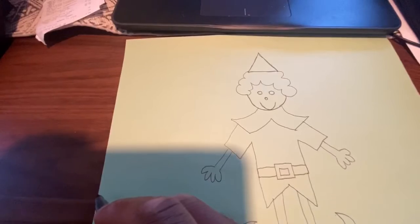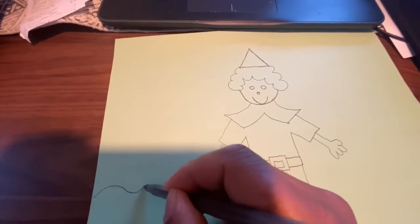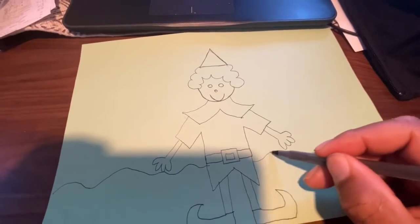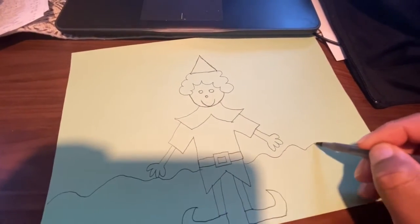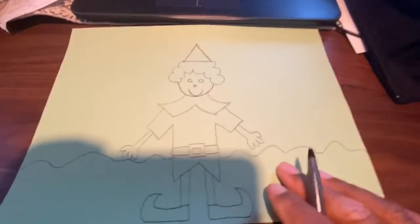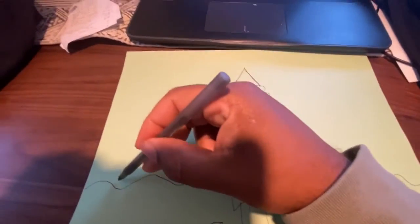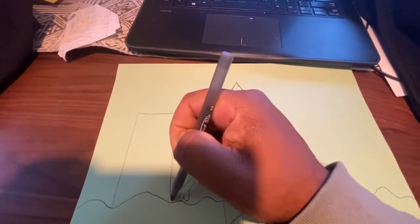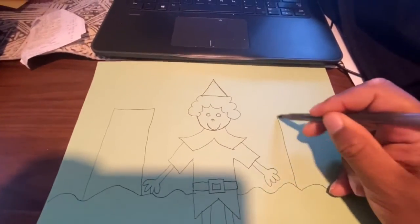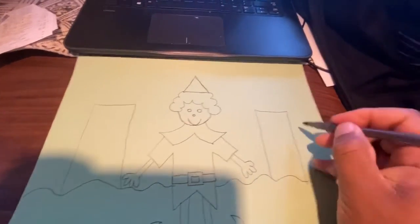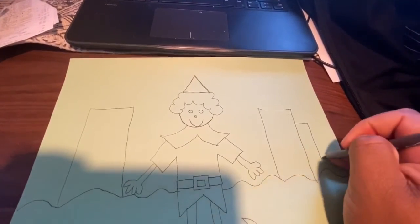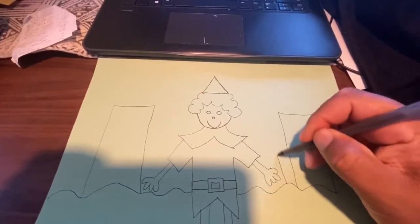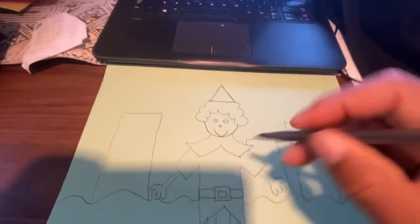Last but not least, we need to do a background. And the background will have like curvy lines, which kind of represents like some snow. Usually, Noel has snow on the ground. And then we'll do some buildings in the background. And these are just going to be big squares or rectangles, rectangles, smaller rectangles, and larger rectangles. And this is just going to make it look like a city background.